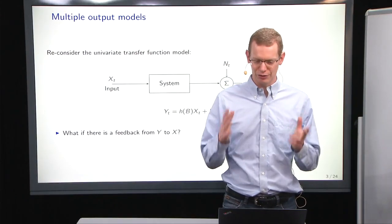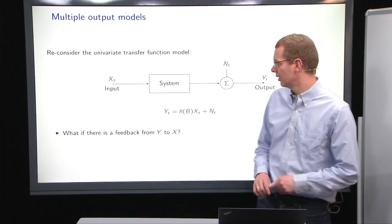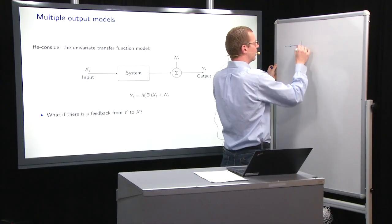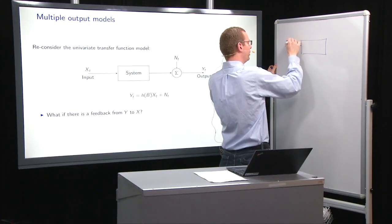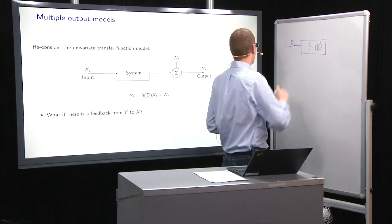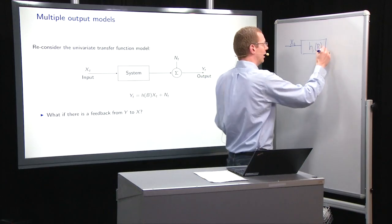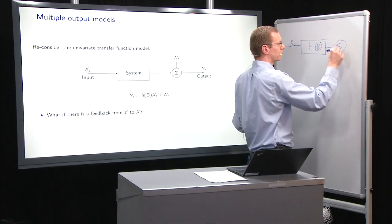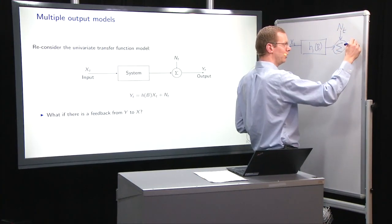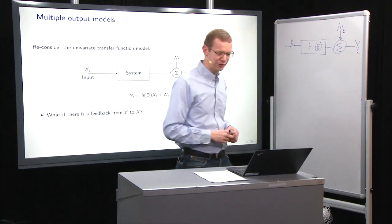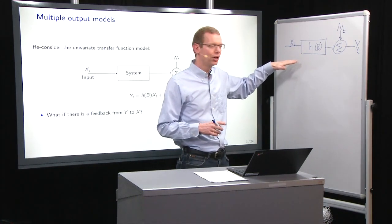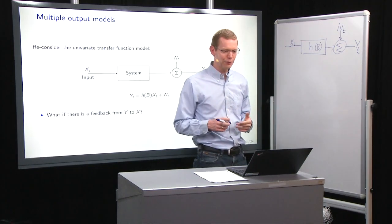In the univariate setting last week we had this structure here. You have an input XT, then you have a system that for now we just call H1 of B as a transfer function. Then we add some noise to it, and then what we have out here is our observations. Now what if we don't just have these observations, but what if we have feedback?